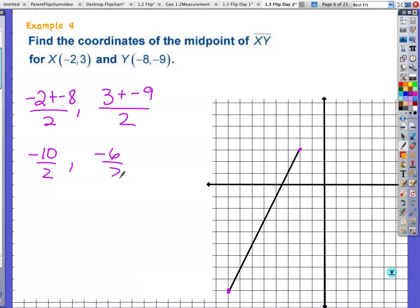So this is like my coordinate there. I have (-5, -3). Let's double check. (-5, -3). Looks pretty promising. If you want to make your triangle, go ahead and do that.